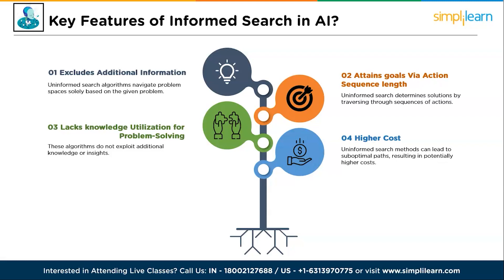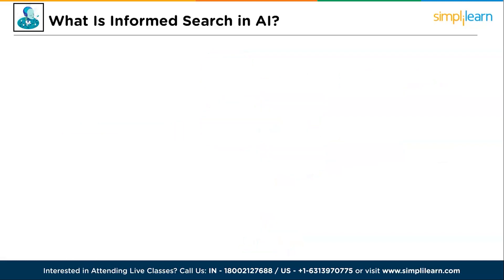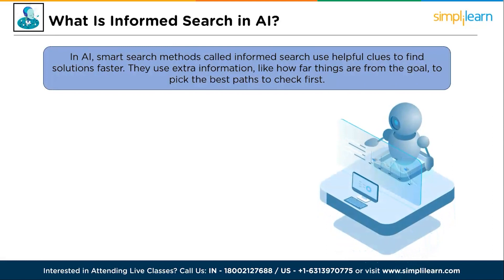The fifth feature is examples: BFS and DFS — breadth first search and depth first search — are classic examples of uninformed search algorithms that explore states and actions without considering additional information, making decisions solely based on their structural characteristics.